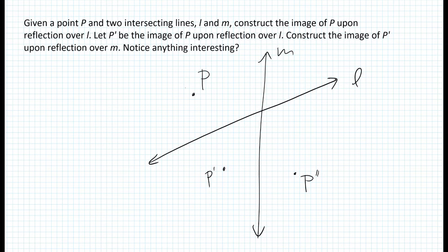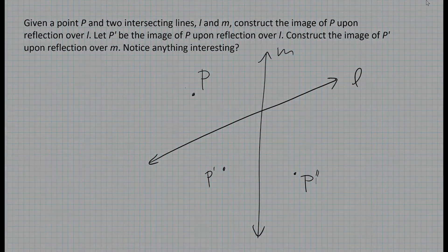So now we have to think about how do we construct? What's the definition of a reflection over a line? And then we want to see if we notice anything interesting here. So let's go on with the construction.